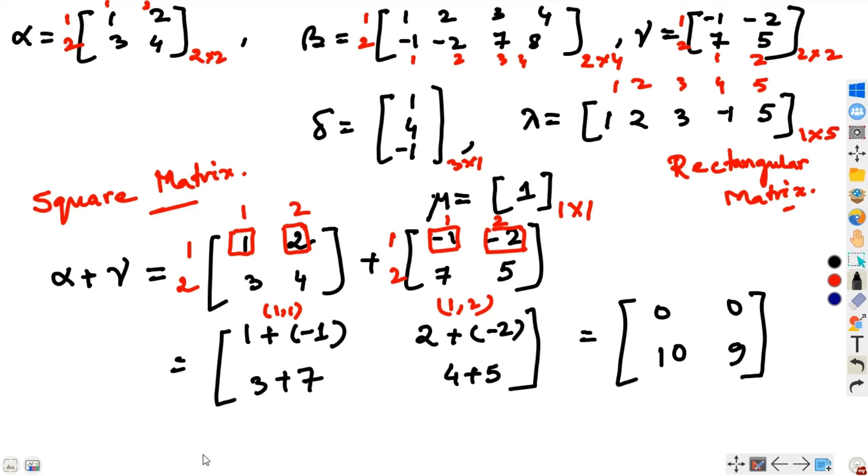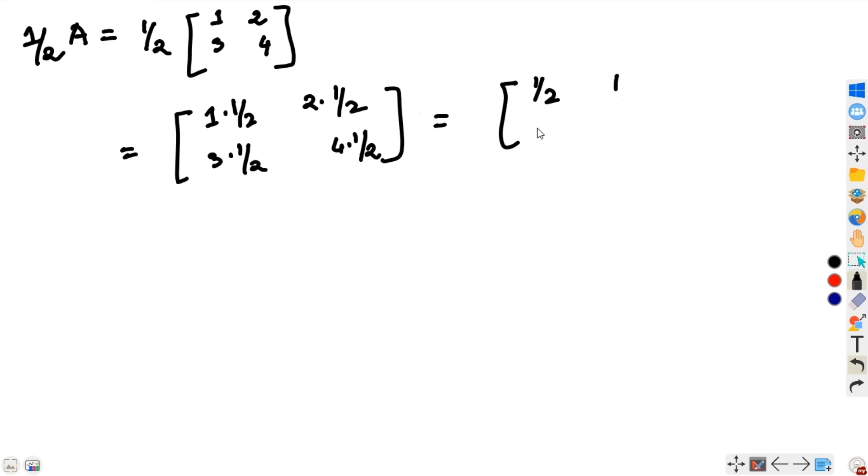Now, we have seen scaling of vectors and matrix is an augmentation of vectors. Therefore, scaling of matrix is also possible. Let us take any number, say half. What is half of A? It is nothing but we need to multiply each of the elements of A with this number. This is like 1 times half, 2 times half, 3 times half and 4 times half. And this gives half, 1, 3 by 2, 2.